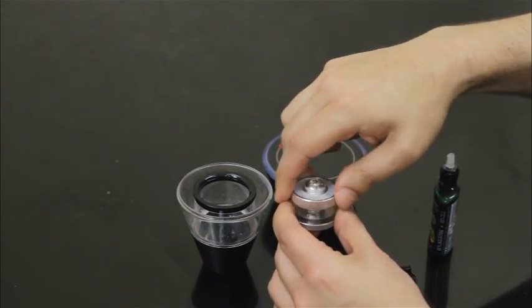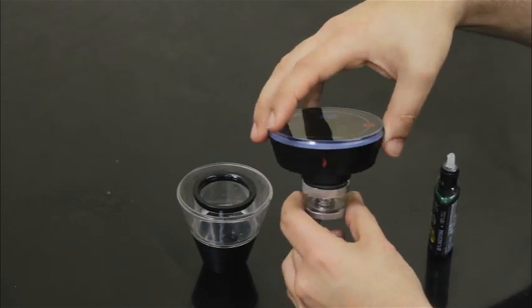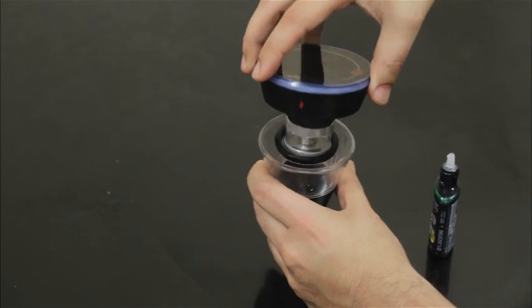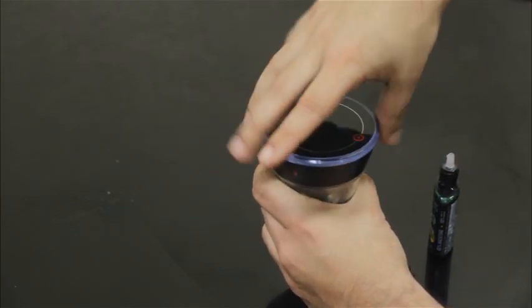When done filling, simply screw the tank cover back on and snap the tank back underneath the control panel and screw the control panel back on top of the base. And that's it! The e-head is now ready for use.